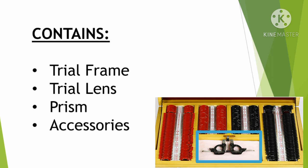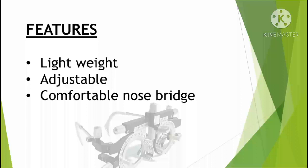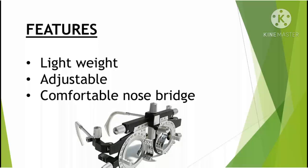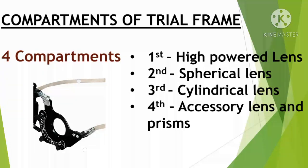Inside a trial box, there is a trial frame, trial lenses, some prisms, and some accessories. The trial frame is an eyeglass frame designed to permit insertion of different lenses used in correcting refractive errors of vision. A trial frame must be lightweight, adjustable, and should have a comfortable nose bridge. There are four compartments in the trial frame in which we place the trial lenses and accessories.